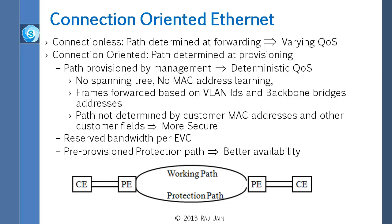With connection-oriented, the path is determined at provisioning. Provisioning could be done by somebody sitting at a terminal and saying set up a path from St. Louis to Kansas City, and it will stay for three months, or for the whole year, until I disconnect it. This is how you get a circuit from the phone company — you call them, they set it up, and when you call to disconnect, it will be disconnected on such and such a date. That is called provisioning. It is like setting up a virtual circuit.